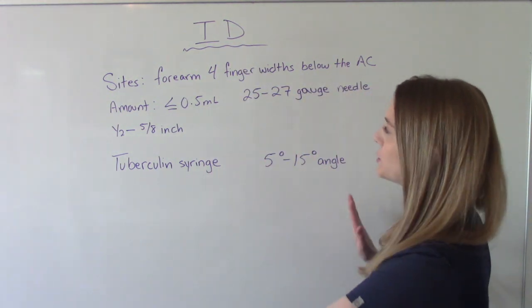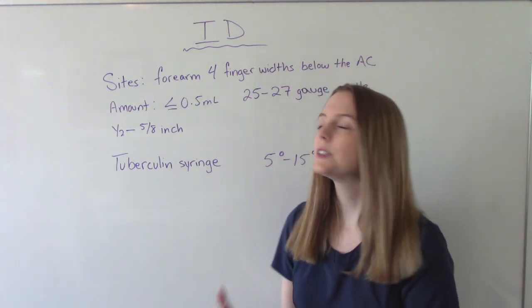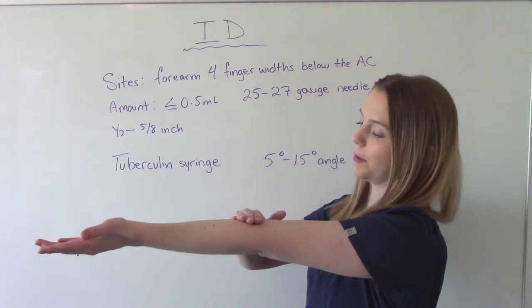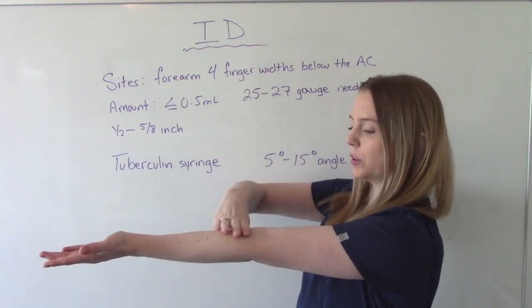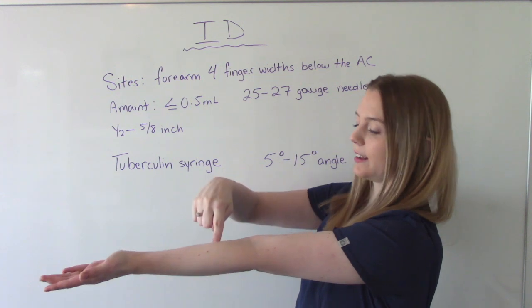The first things you need to know, where is it done? It's most commonly done on the forearm, about four finger widths below the AC. So about right here.